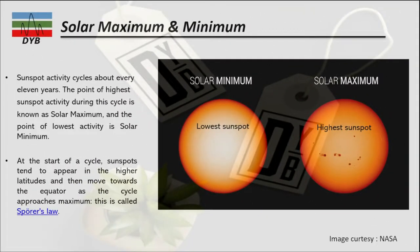There are two terms used: solar maximum and solar minimum. The sunspot activity cycles about every 11 years. The point of higher sunspot activity during this cycle is known as solar maximum — at this time you can see higher sunspot activity and observe a large number of sunspots on the surface of the sun. When there is less sunspot activity, you will not be able to see as many sunspots on the surface of the sun.